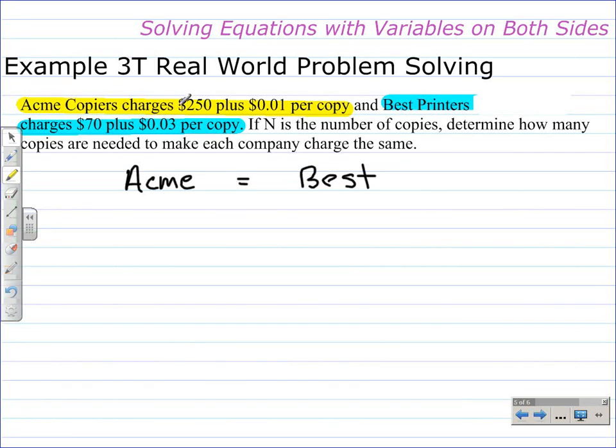The $250 is a flat charge, so that will be $250 plus $0.01 per copy, and we need to multiply that by the number of copies. This expression, $250 plus $0.01 times n, represents the charge for Acme Copiers.